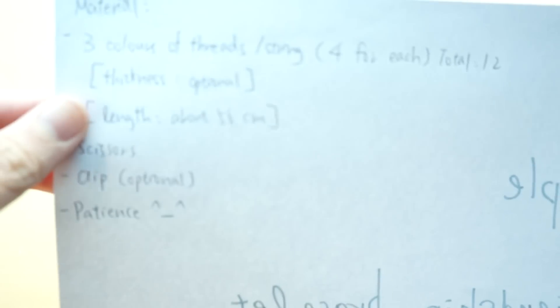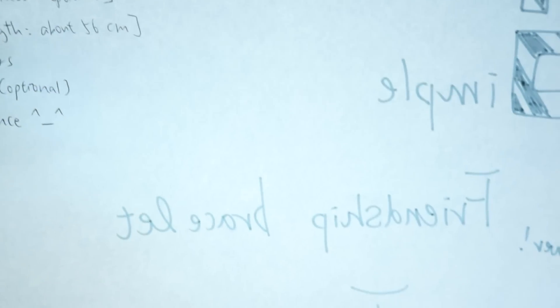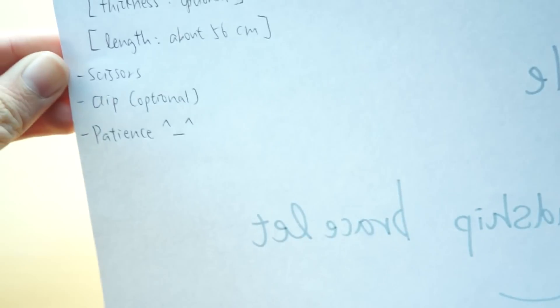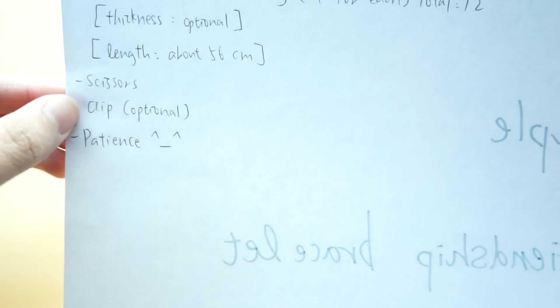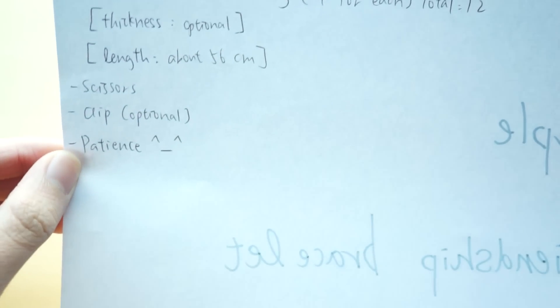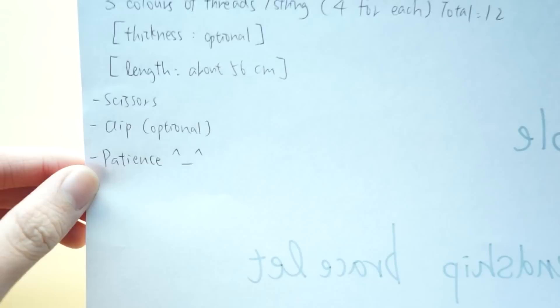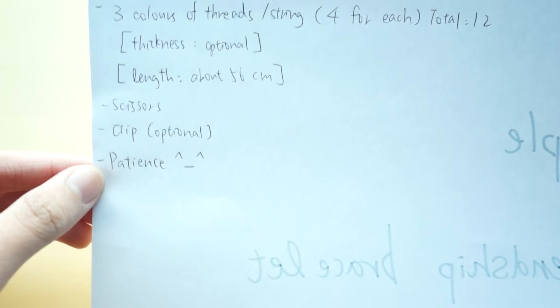And the length is about 56 cm, so just measure it very randomly. You will need scissors to cut off the excess, and you will need clip optional. And you will need patience because it will take you a bit of time to finish up the whole bracelet.